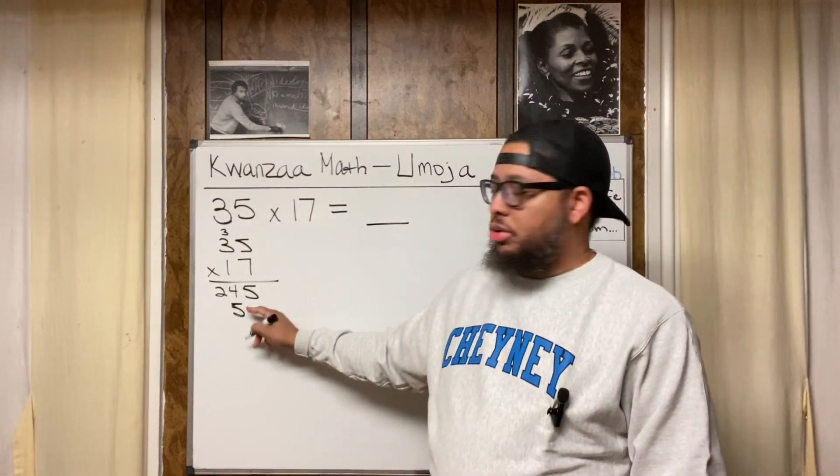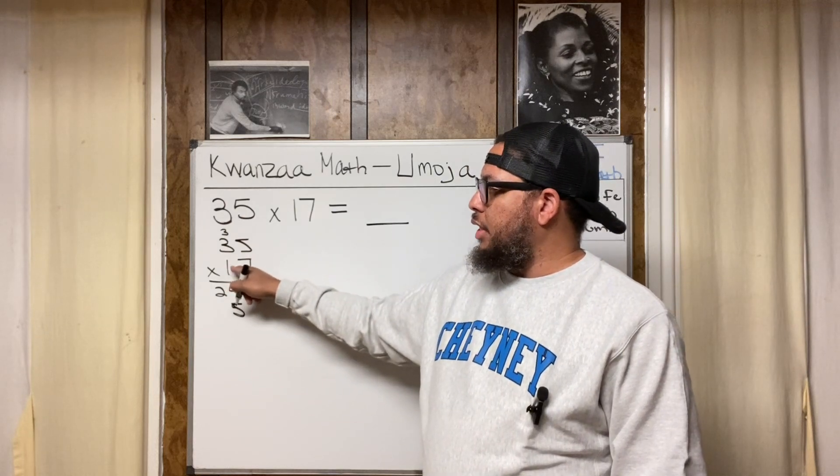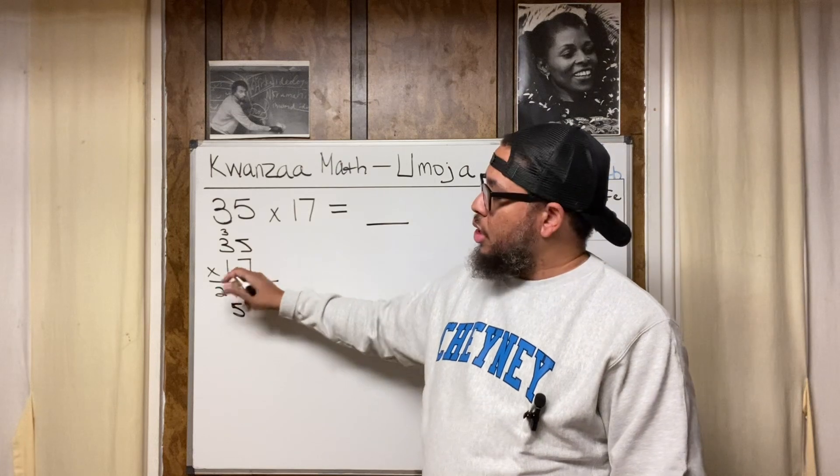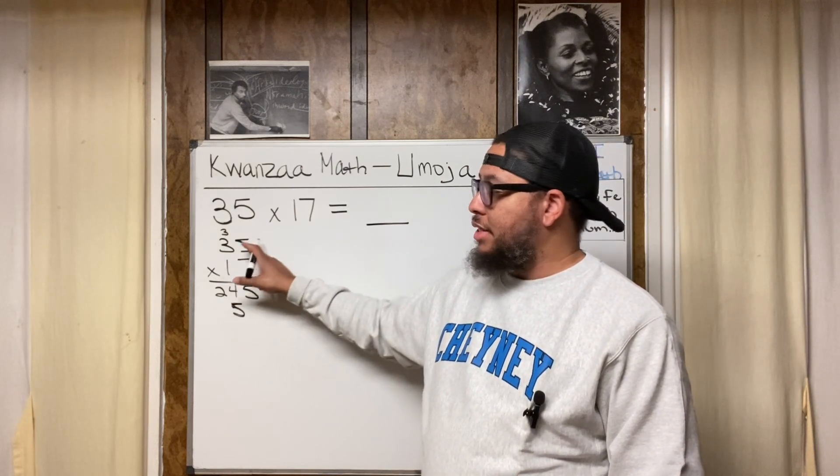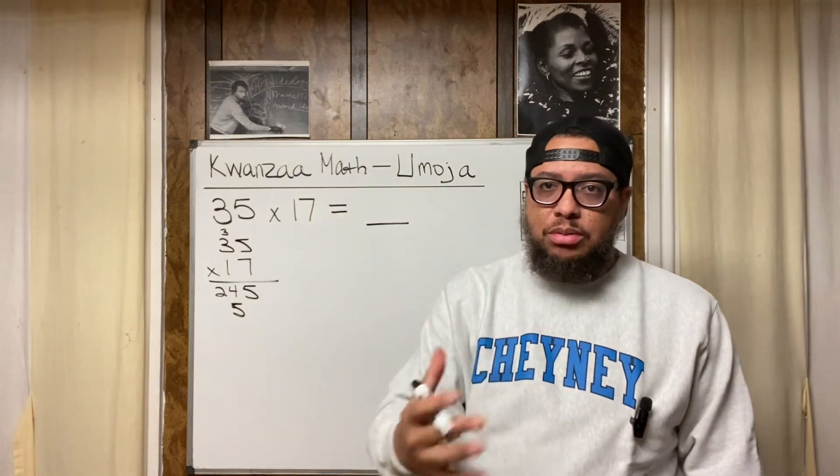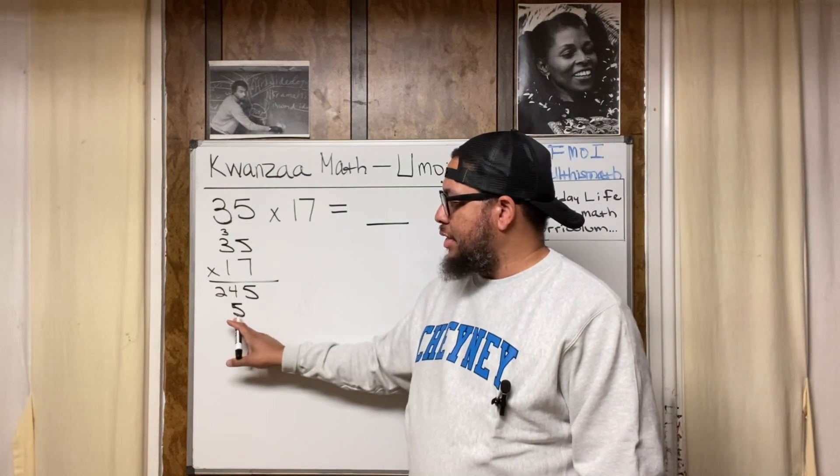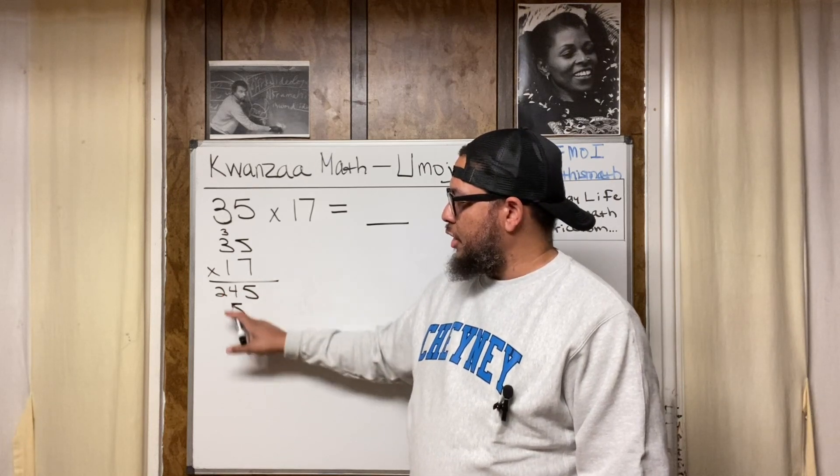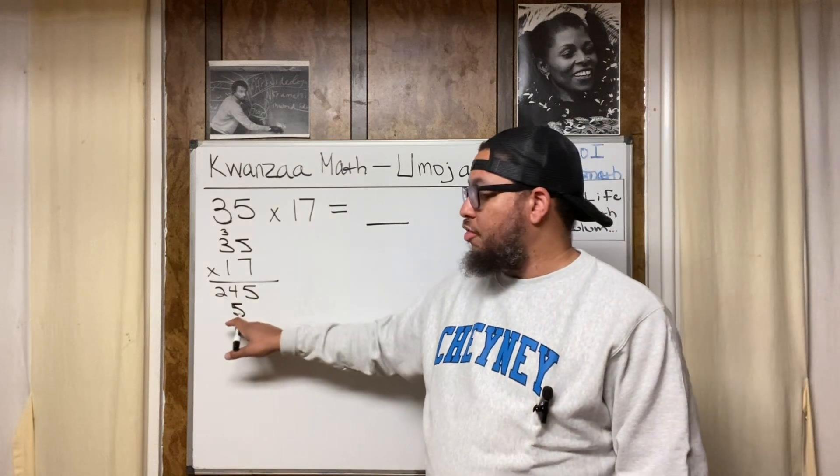The reason you indent one space, and some teachers also tell students to just write a 0 right there, is because this is a 1, but it really actually is a 10. It represents a 10 because it's in the tens place. So you're really not doing, technically not doing 1 times 5. You're really doing 10 times 5. And we know that 10 times 5 is 50. So 50 would be a 5 in the tens place, just like this 4 is in the tens place. So the 5 should be in the tens place. That's why some teachers say to just put a 0 here to represent the 50.